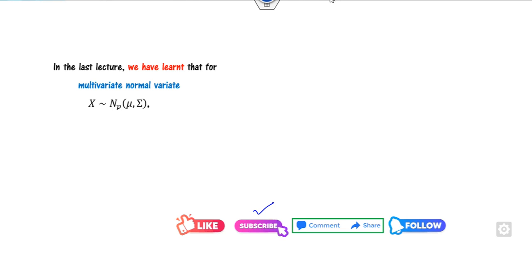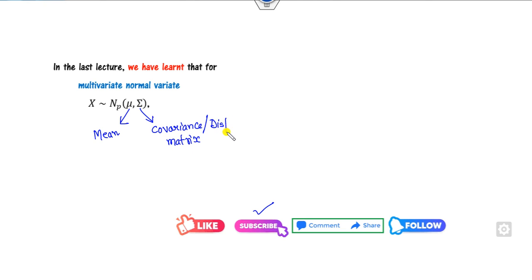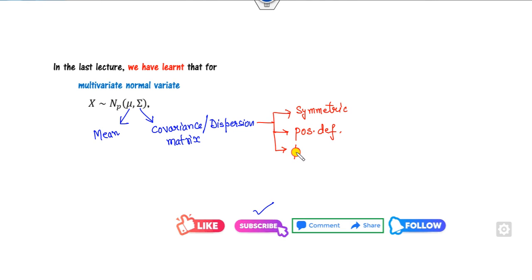What we discussed in our last lectures: if you have the multivariate normal distribution x, where mu is called the mean vector and sigma is called the covariance matrix. Remember, the covariance matrix is also called the dispersion matrix. We defined that this covariance matrix is always a symmetric matrix, always positive definite, and is a square matrix of size p cross p, where p is the dimension of the problem.